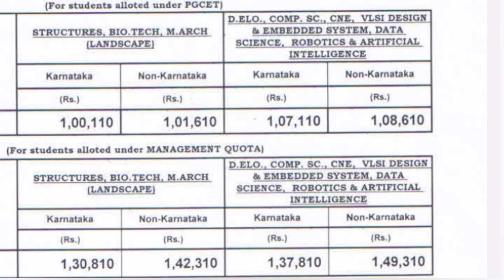This fee applies to branches like structural engineering, biotechnology, and VLSI. For other courses like computer science and VLSI design, the fee is 1,07,000 rupees for Karnataka and 1,08,610 for non-Karnataka. For management quota seats, the fee is 1,30,810 for base branches and 1,37,810 for computer and emerging branches.